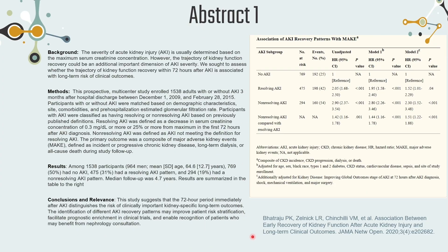We'll start with the first abstract, taken from an article published in the JAMA Network Open. Before we go into the questions, I want to give you a general overview of the structure of abstracts. An abstract is like a summary of a research article. A research article starts with an introduction, followed by methods, results, discussion, and conclusion. I'll be focusing only on abstracts for the USMLE exams.